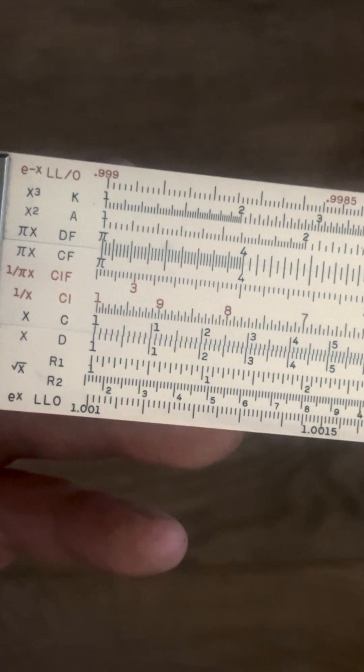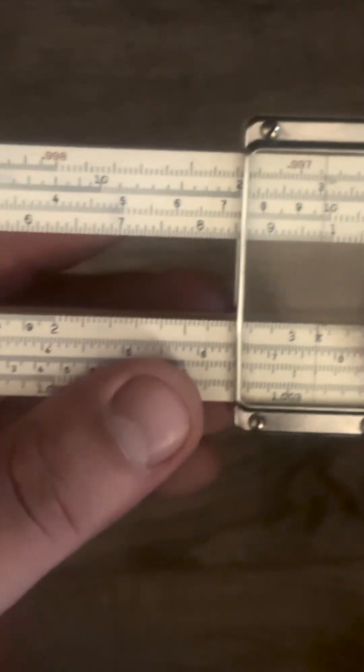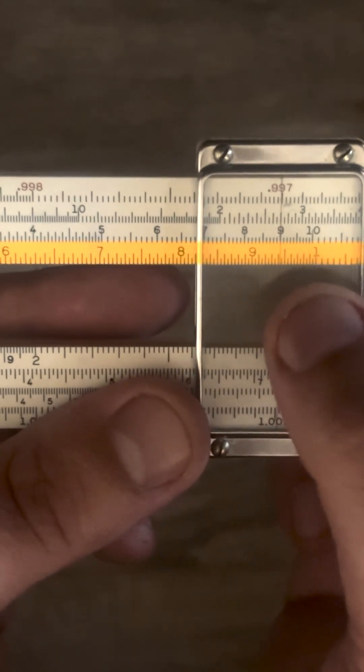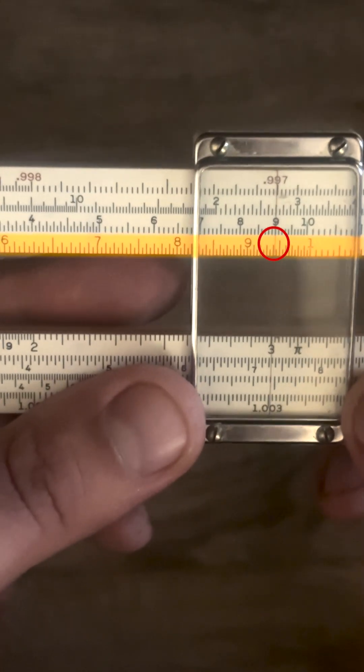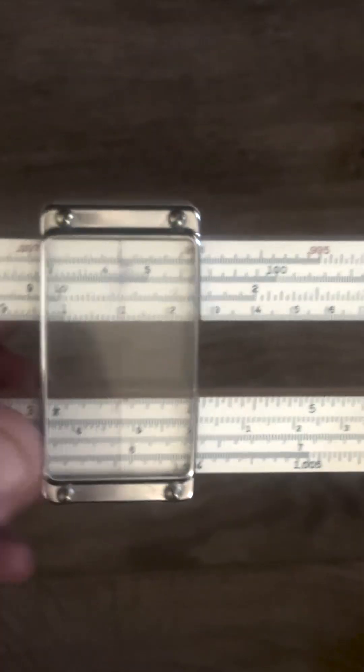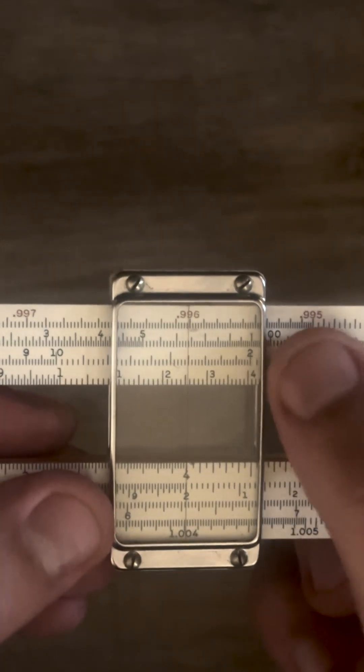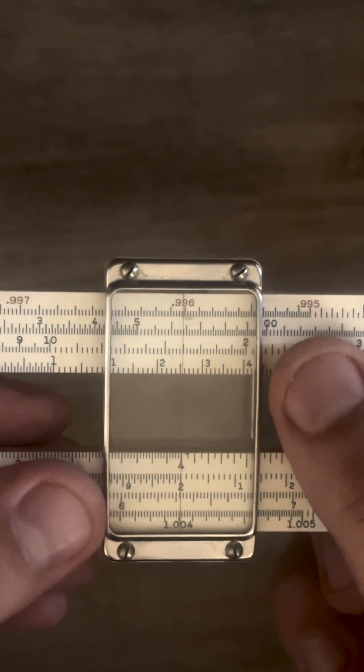So what can we do with this? We can multiply anything on the D scale by pi. So if I take out the middle slide just to avoid confusion. Now if we put any number on the D scale like 3 and we go up to the D folded scale we get about 9.4 and that goes all the way down. So anytime you want to find pi times something you could just put it on the D scale and then go up to the D folded scale and it'll give you your answer.